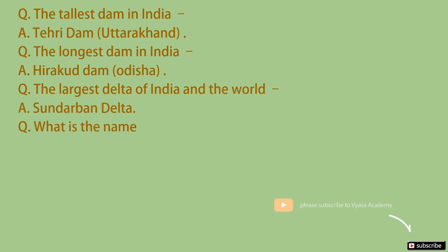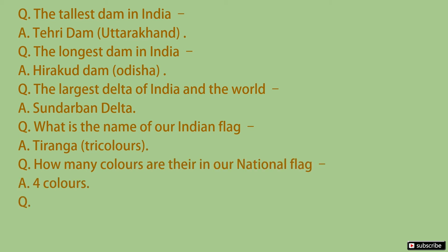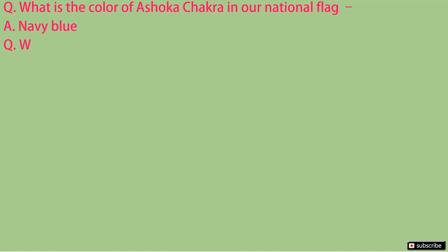What is the name of our national flag? It's Tiranga. It means three colors. How many colors are there in our national flag? We have four colors. How many strokes are there in Ashoka Chakra? They are 24. What is the color of Ashoka Chakra in our national flag? It's navy blue. Who designed the national flag? It's Pingali Venkaiya.